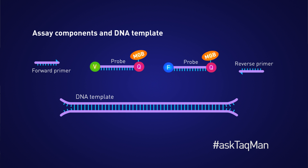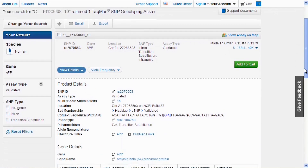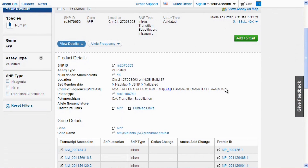One probe labeled with VIC dye detects the allele 1 sequence, and another probe labeled with FAM dye detects the allele 2 sequence. Note that all genotyping assays use the same notation for the context sequence, which is the immediate sequence around the SNP. The first base in brackets is detected by the VIC probe and the second base by the FAM probe. You can find all of this information online for every assay.